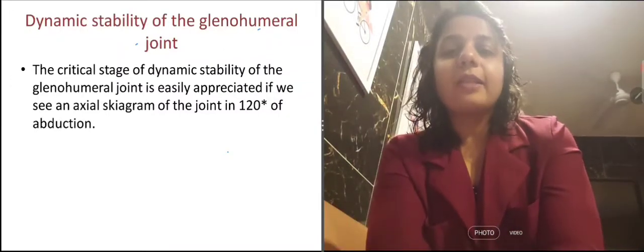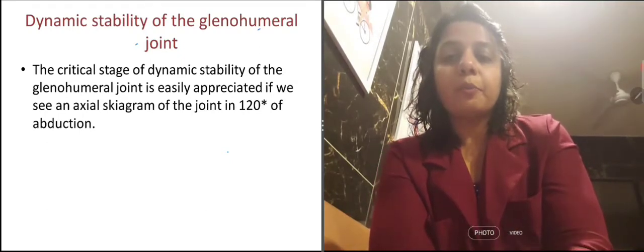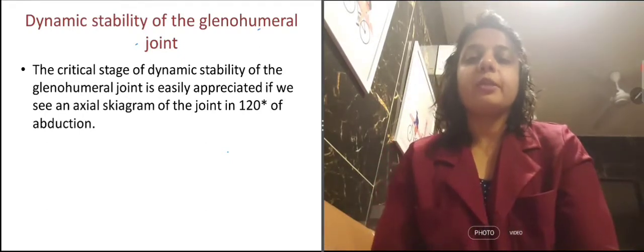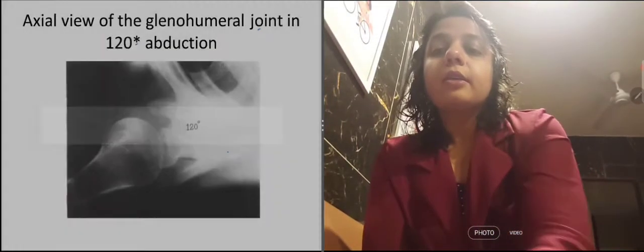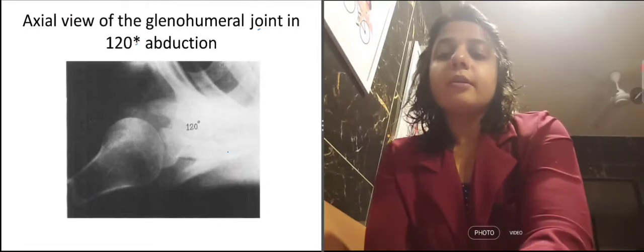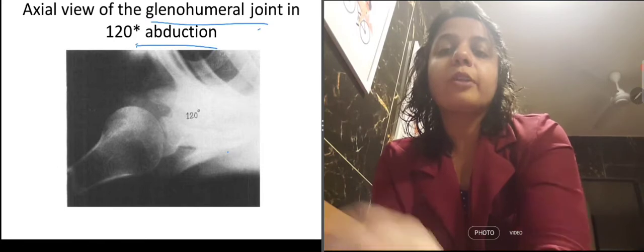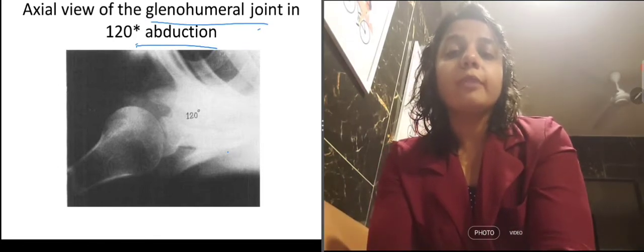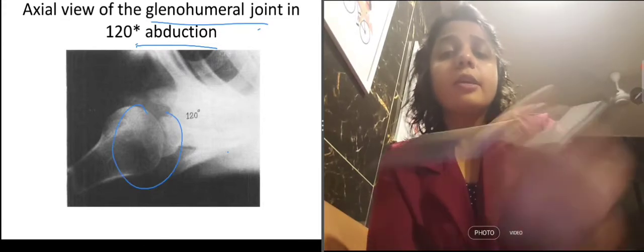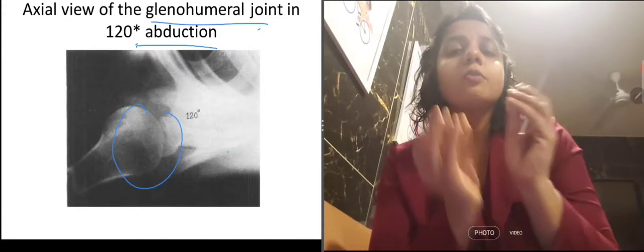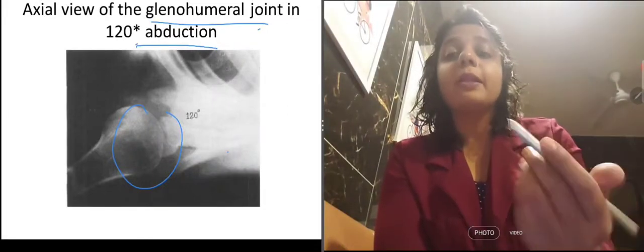It is very unstable as compared to the hip joint. The critical stage of dynamic stability of the glenohumeral joint is easily appreciated if we see an axial skygram of the joint in 120 degrees of abduction. You can see here the axial view of the glenohumeral joint at 120 degrees abduction. All of the humeral head is in front — anteriorly — and only a small part is in contact with the glenoid. So you can think how unstable it actually is.